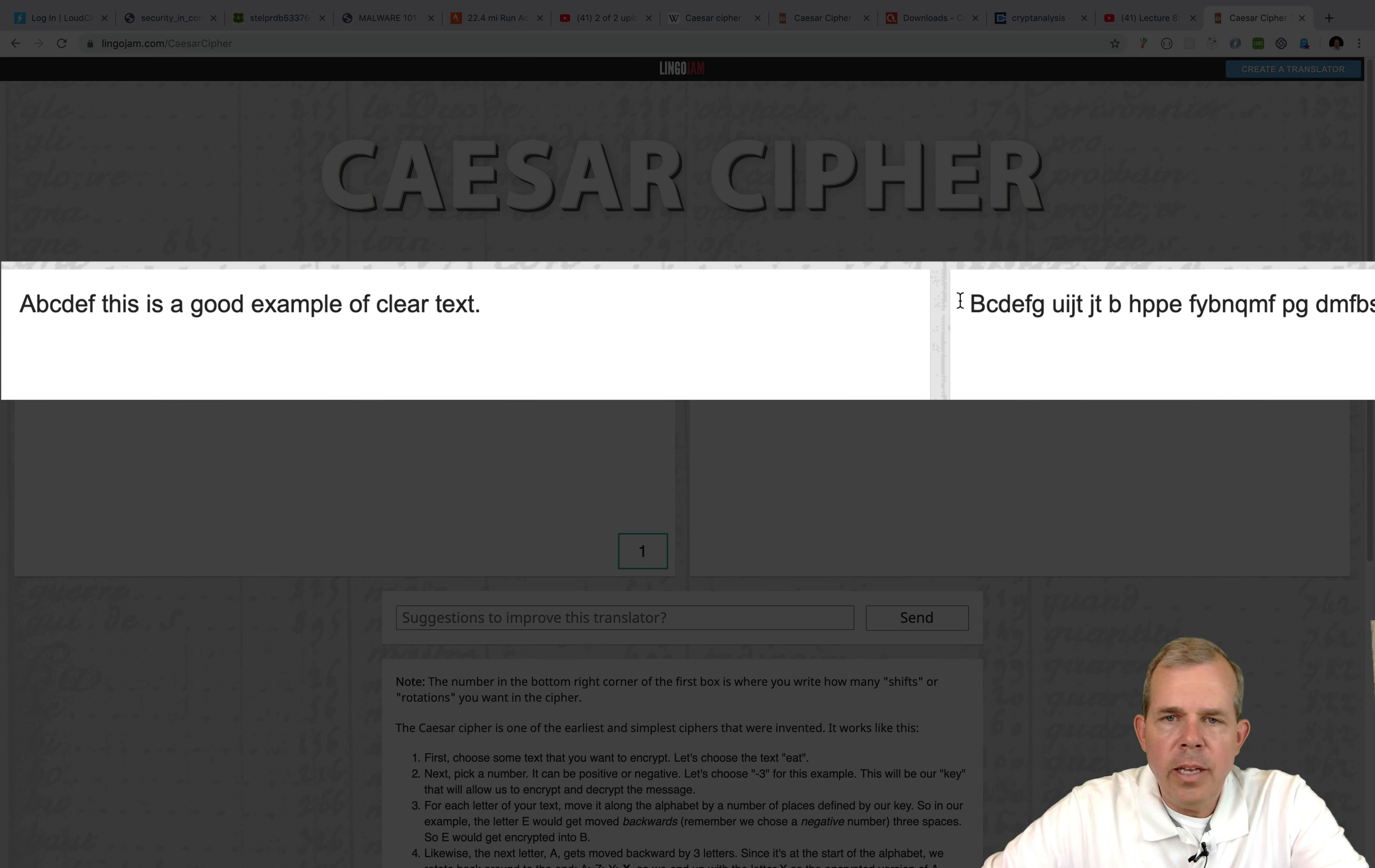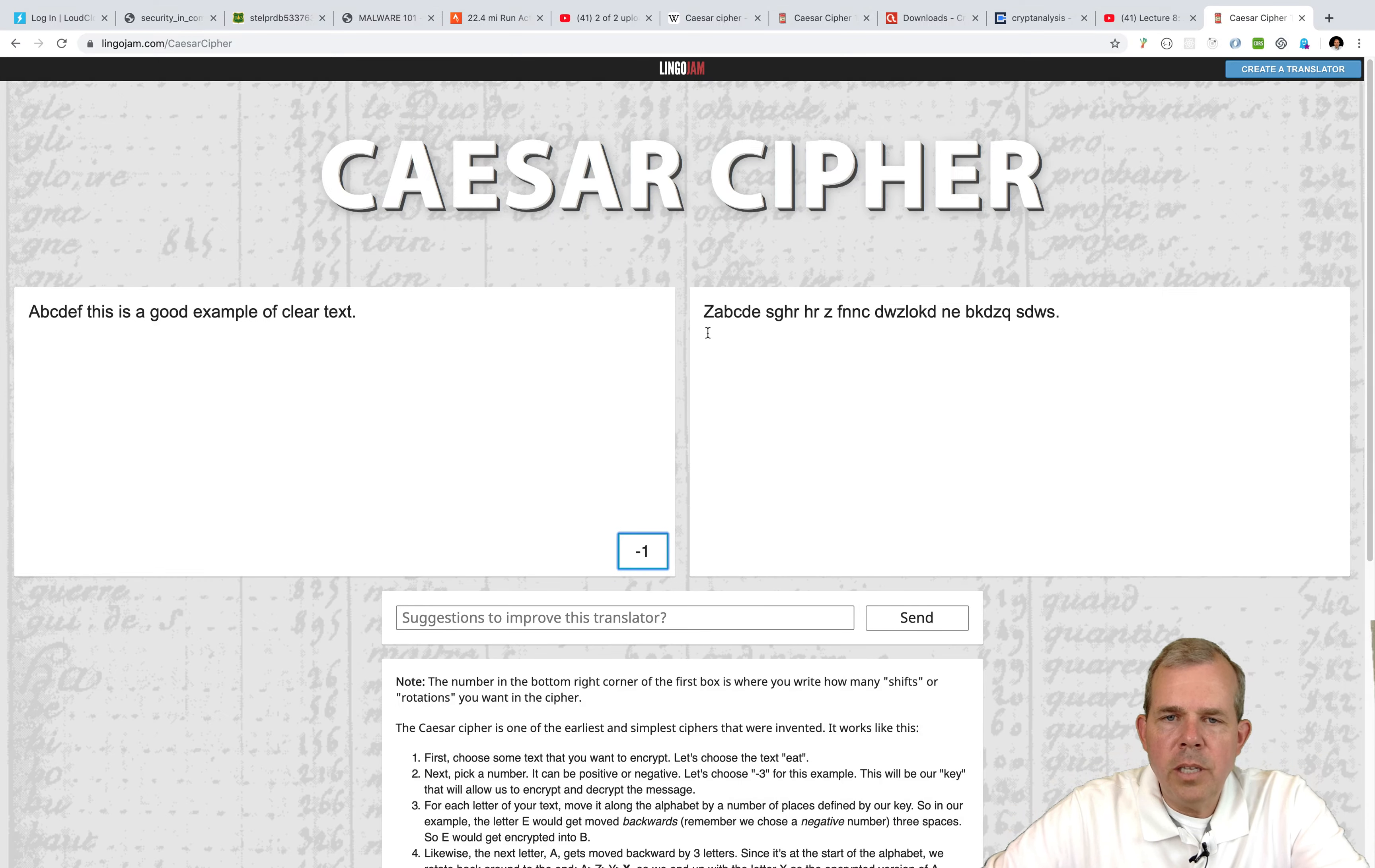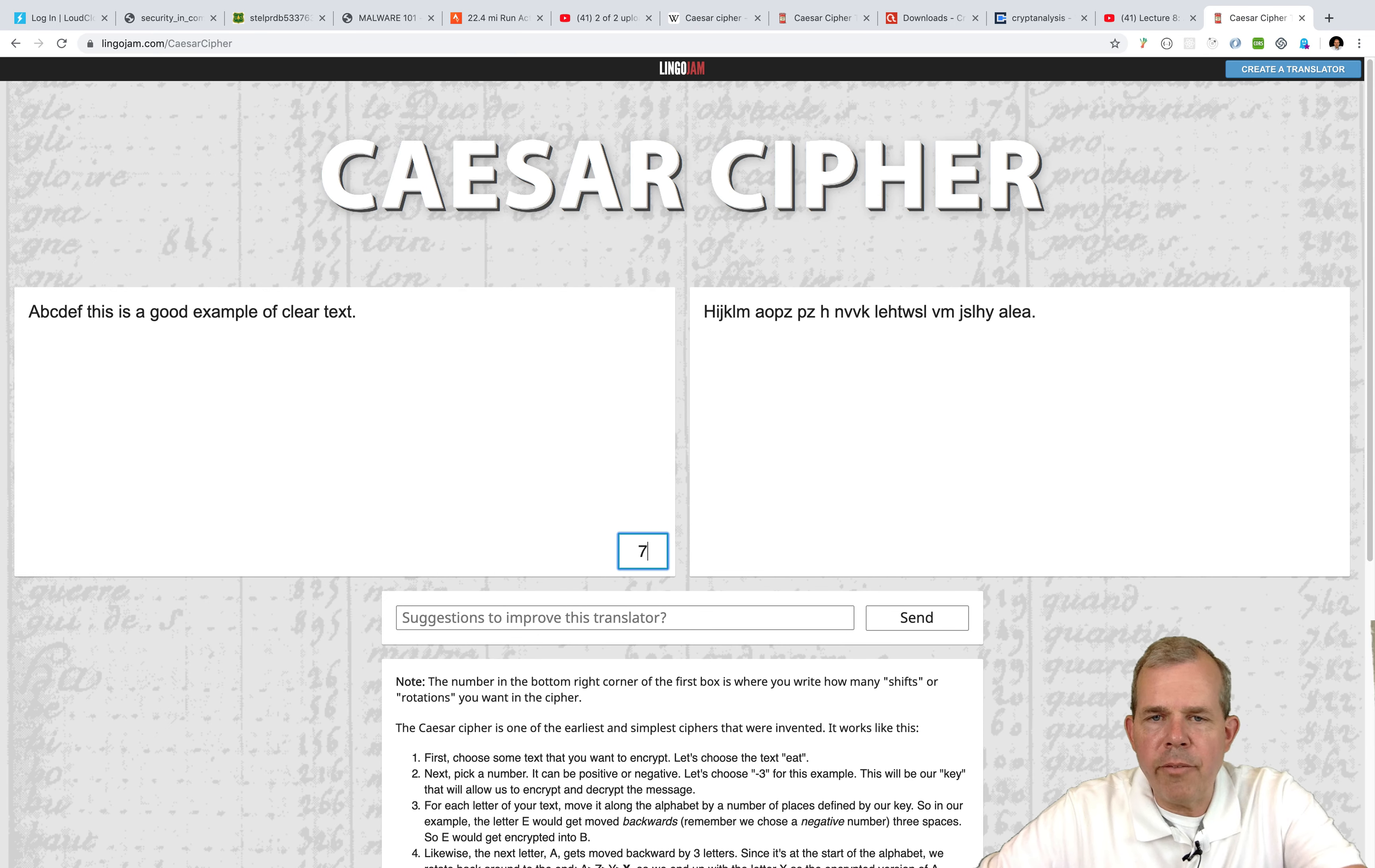So let's put in our alphabet, A, B, C, D, E, F, and you can see I have B, C, D, E, F, G. Now I can shift the other direction. I can put in a negative 1, and so the A shifts around to a Z. Now if you put in something like a 7, then it becomes less obvious. But in any case, we're just shifting letters one place to the left or to the right.